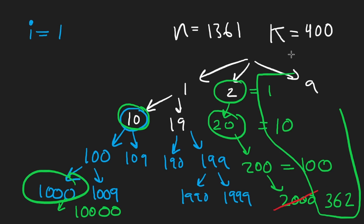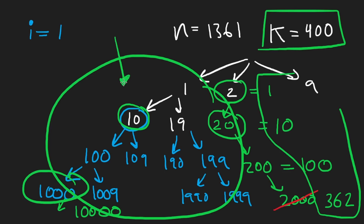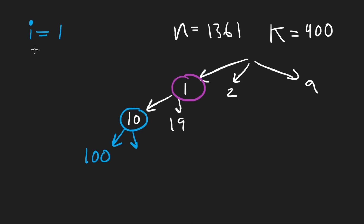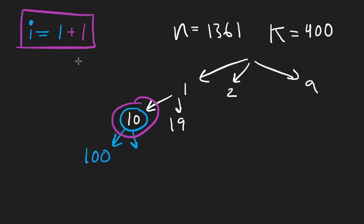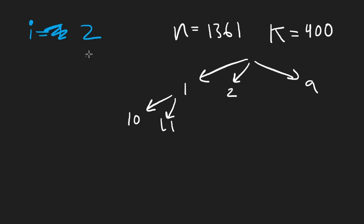Long story short, that total is greater than k — so there are enough numbers in the subtree rooted at 1 for us to have the 400th number. We're going to go down this path to 10. That was the first number in lexicographical order. Going here means multiplying by 10 — that's a jump of 1, so our i is now at position 2. But just because we're at 10 doesn't mean the answer is definitely in that path — now we make the same choice again.